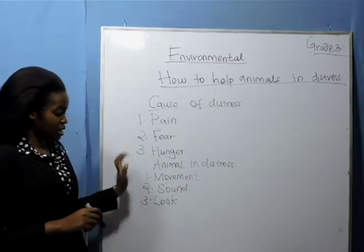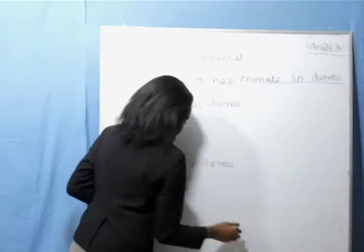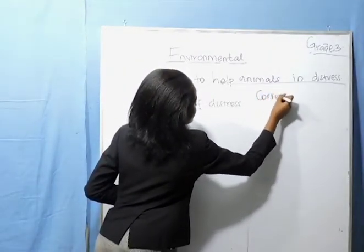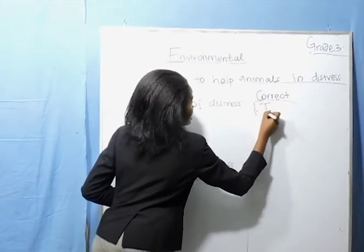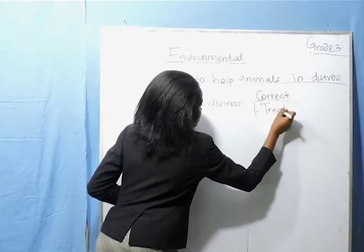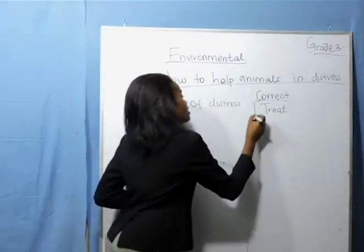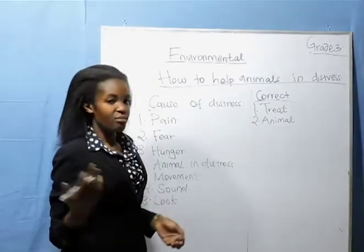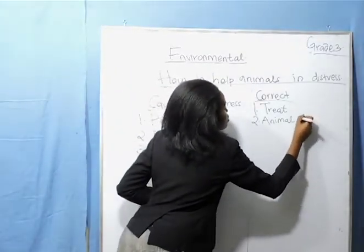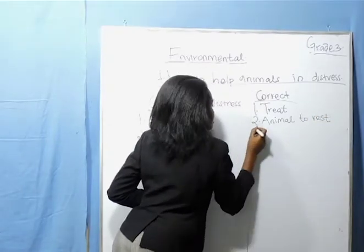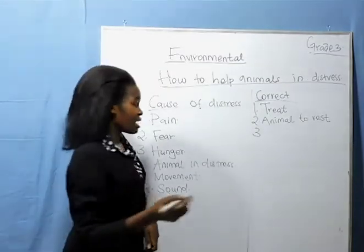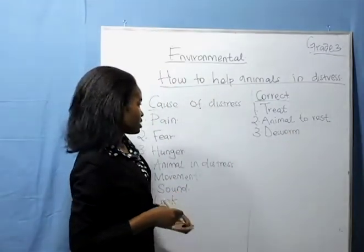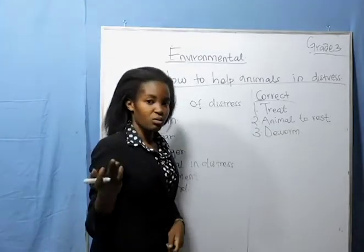How are you going to help the animal in distress? First, you need to treat the animal if it's sick — treat the sick animals. Another one, you allow animals to rest; maybe they are tired of the heavy work, so you allow the animal to rest. You can also deworm the animals — maybe it's worms that are affecting them, causing distress.